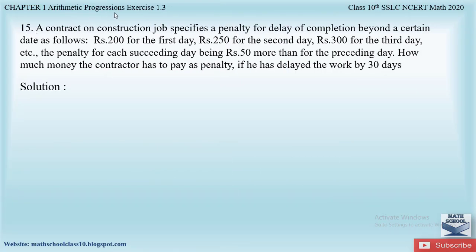A contractor on a construction job specifies a penalty for delay of completion beyond a certain date as follows: rupees 200 for the first day, rupees 250 for the second day, rupees 300 for the third day, and so on. The penalty for each succeeding day being rupees 50 more than for the preceding day. How much money does the contractor have to pay as penalty if he has delayed the work by 30 days?